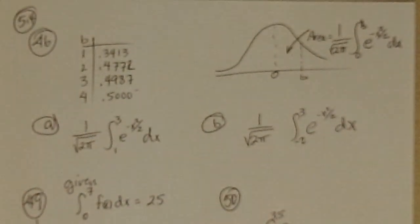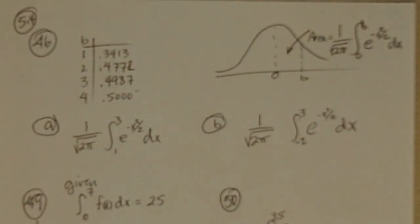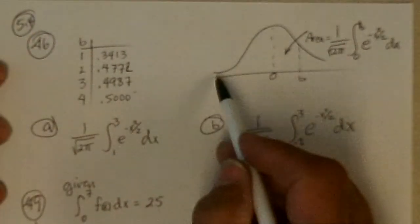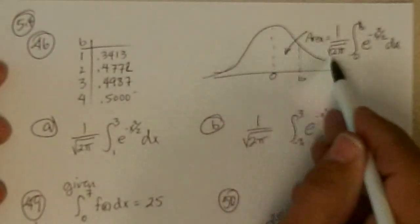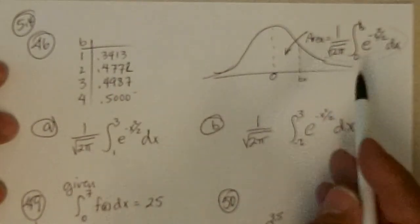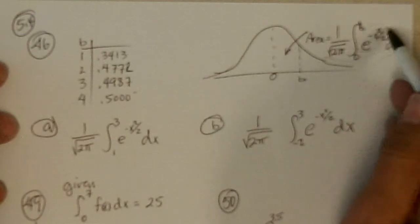5.4, 46. 46 says if you have this normal bell-shaped curve, the equation for its, the area is this, the equation for the curve is y equals that.